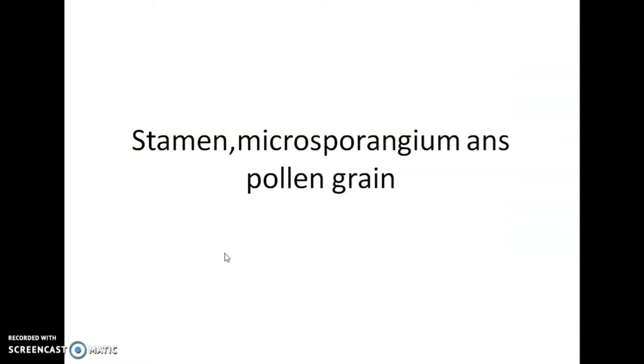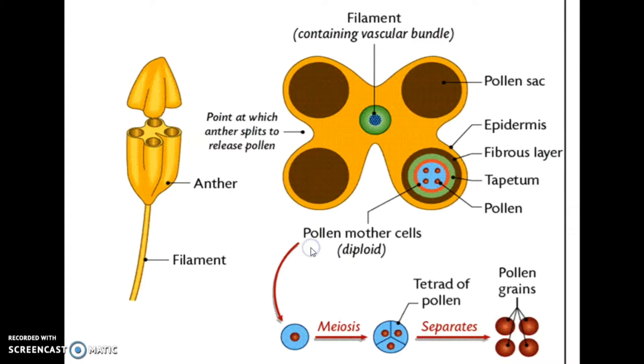Now let's learn about stamen, microsporangium, and pollen grain. The diagram shows two parts of a typical stamen. The long slender stalk is called filament, and the terminal generally bilobed structure is called anther. The number and length of stamens are variable in flowers of different species.